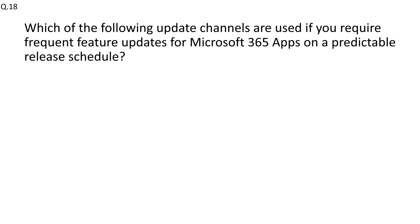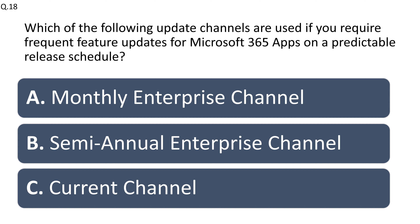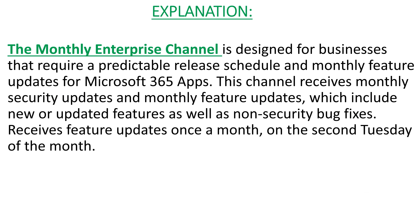Question number eighteen: which update channel should you use if you require frequent feature updates for Microsoft 365 apps on a predictable release schedule? Options: Monthly Enterprise Channel, Semi-Annual Enterprise Channel, or Current Channel. The right answer is Monthly Enterprise Channel. It is designed for businesses requiring a predictable schedule and monthly feature updates, receiving security updates and new features once a month on the second Tuesday of the month.